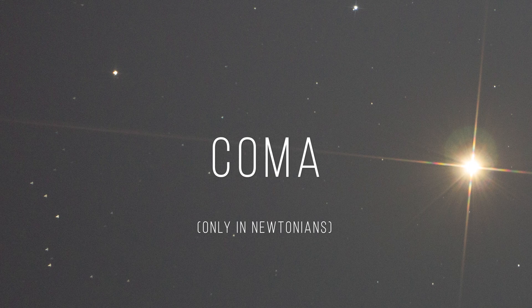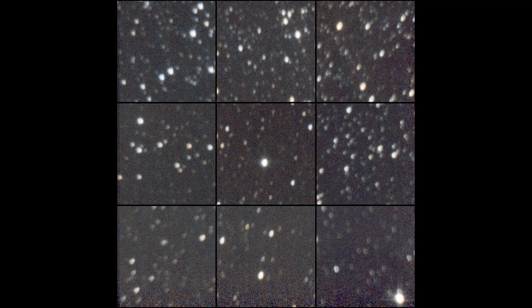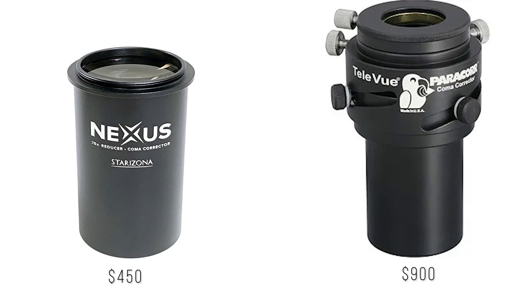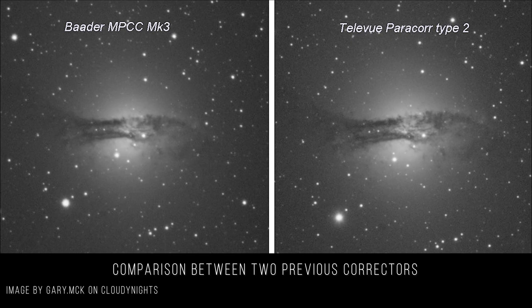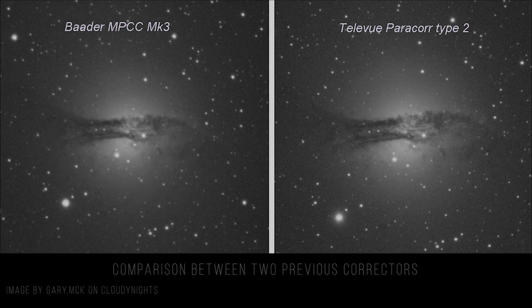Next is coma. Coma is a result of the parabolic mirror Newtonians use to collect and magnify light. Luckily this is a relatively easy fix — all you need to do is install a coma corrector into your imaging train. Unfortunately these are not super cheap and in some cases can cost as much as the telescope itself, but they are necessary if you want clean, crisp stars. These also require good collimation to work properly.